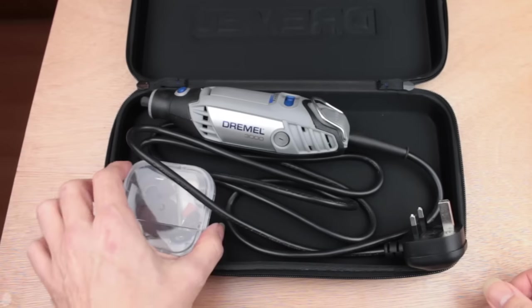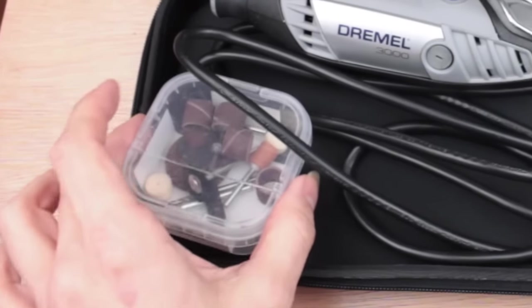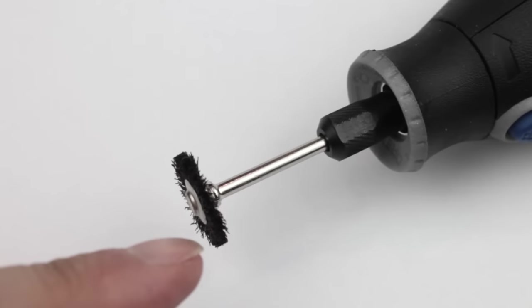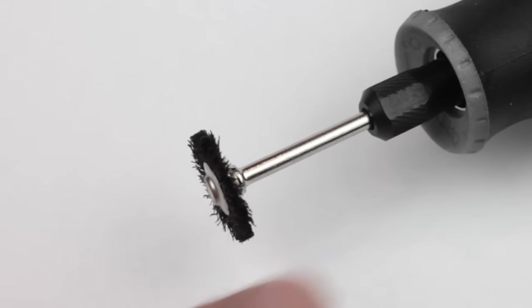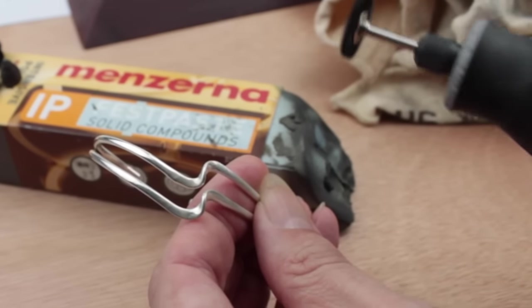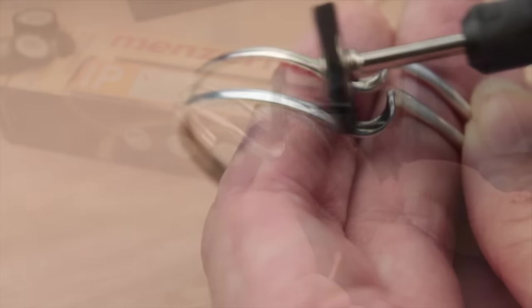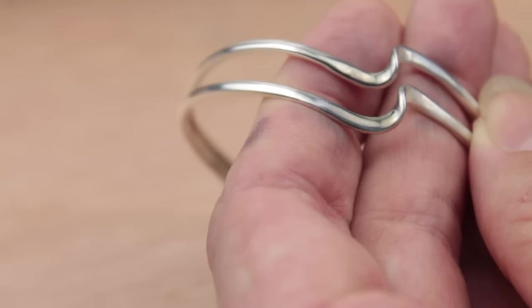Now let's have a look at some of these accessories that come bundled with it. So this is a small black nylon brush and this is really good for cleaning. If you use polishing compound with it you can use these for polishing. I use a lot of these particularly with intricate jewelry and you can really see there it gets into all the little nooks and crannies and does a really great job.